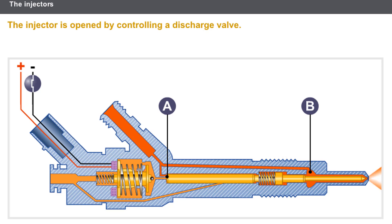The electromagnet is no longer supplied and the discharge valve closes. The fuel pressure at A increases and is balanced by the fuel pressure at B. The spring brings the needle back to the closed position and the injection phase is complete.